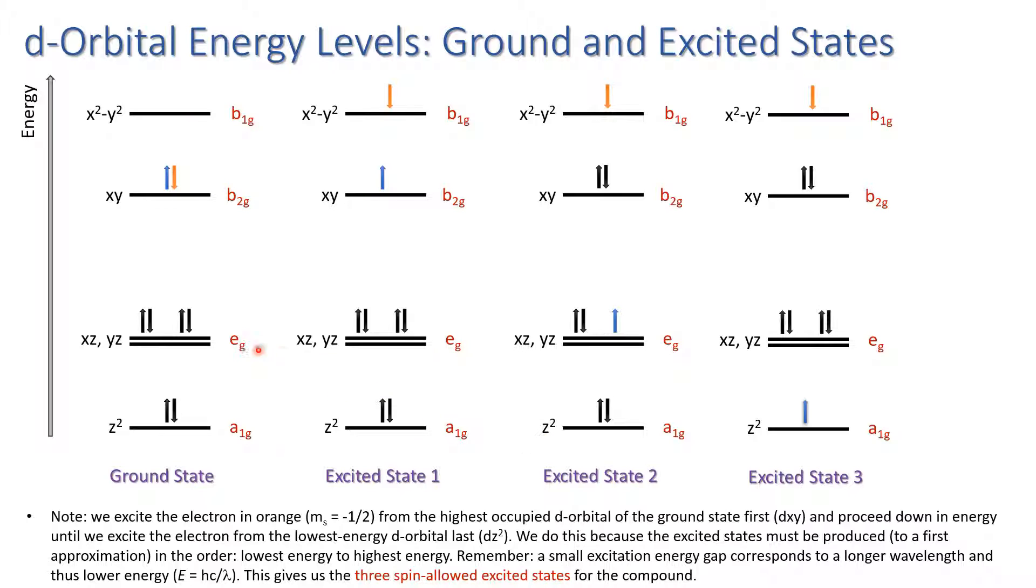Excited state two is written by exciting an electron from the eg level to b1g. Excited state three, we take an electron from the a1g level excited across the full energy gap of the d orbitals to the dx²-y² orbital here. So the third excited state is then represented at the right hand side.